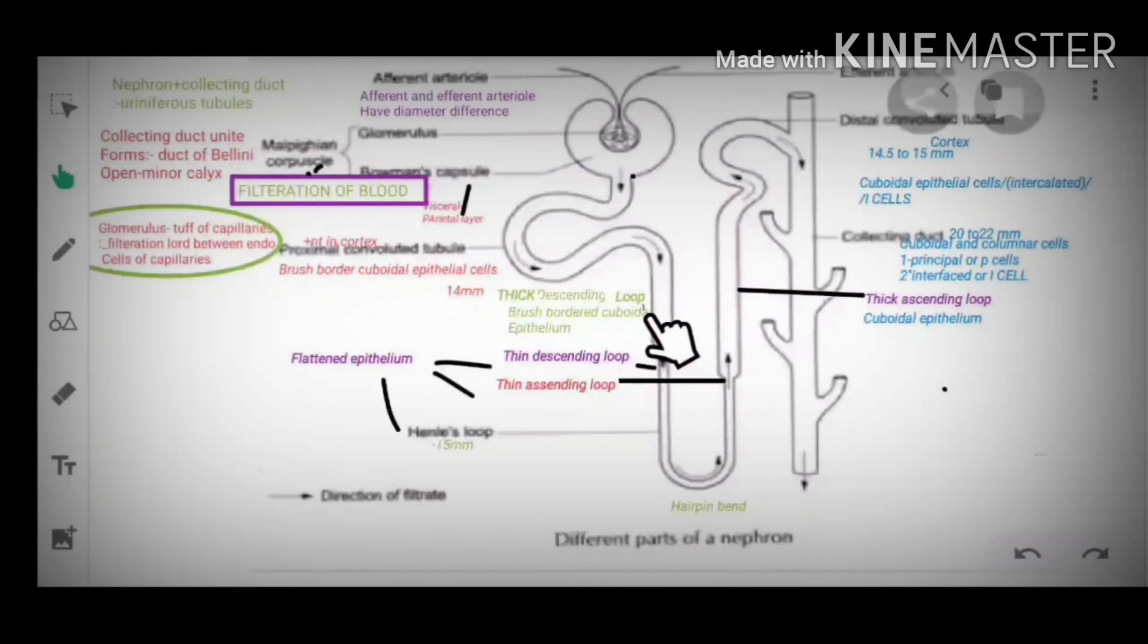Thick descending loop of Henle has brush border cuboidal epithelium. And it continues as thin descending loop of Henle which continues as a hairpin bend and then continues in thin ascending loop of Henle.